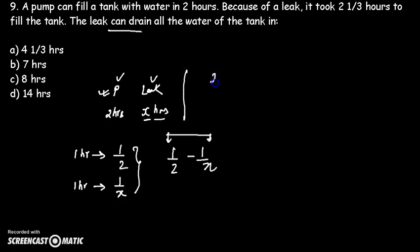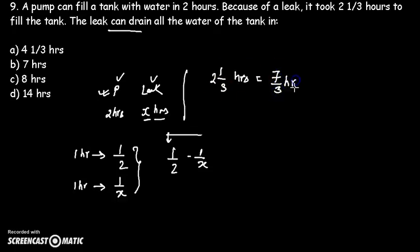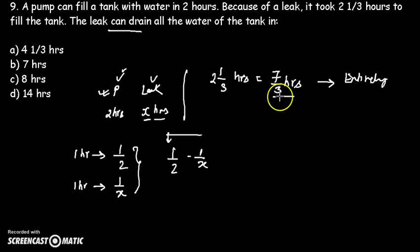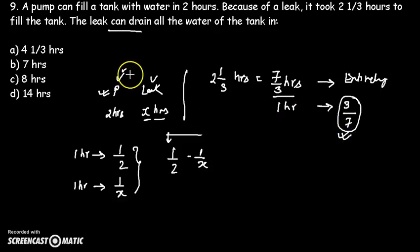We also have the data that with both pump and leak functional, the tank takes 7/3 hours to fill entirely. If they take 7/3 hours to fill the tank, then in 1 hour their total net work done is 3/7. We also have the expression 1/2 minus 1/X for the same quantity, so we can equate both of them.